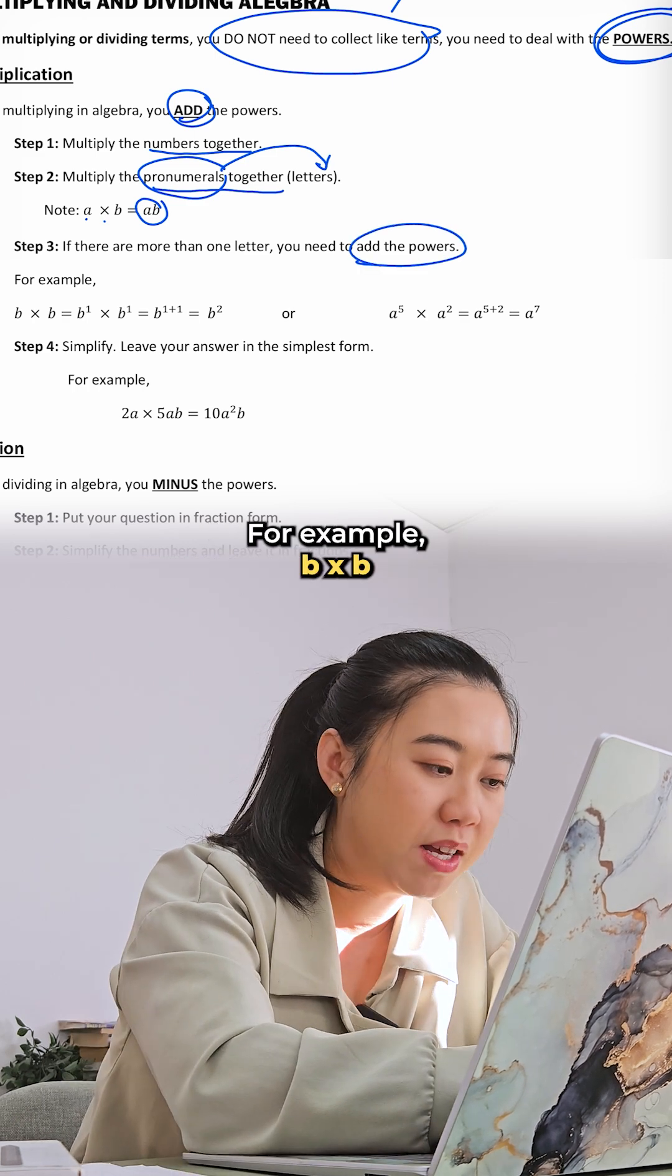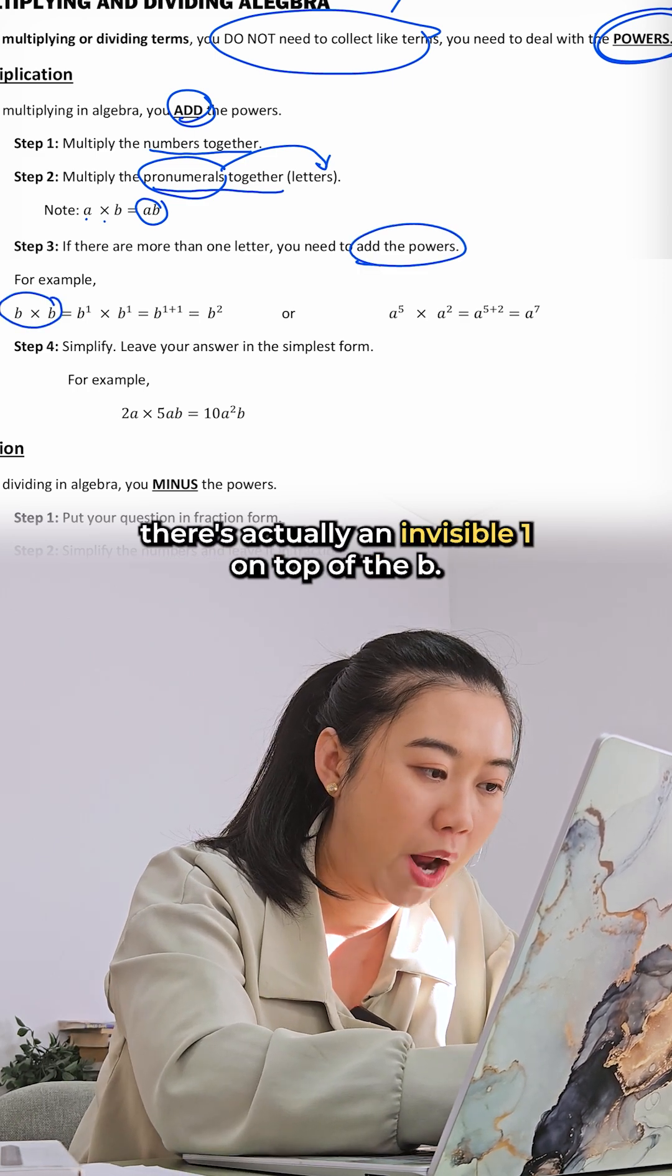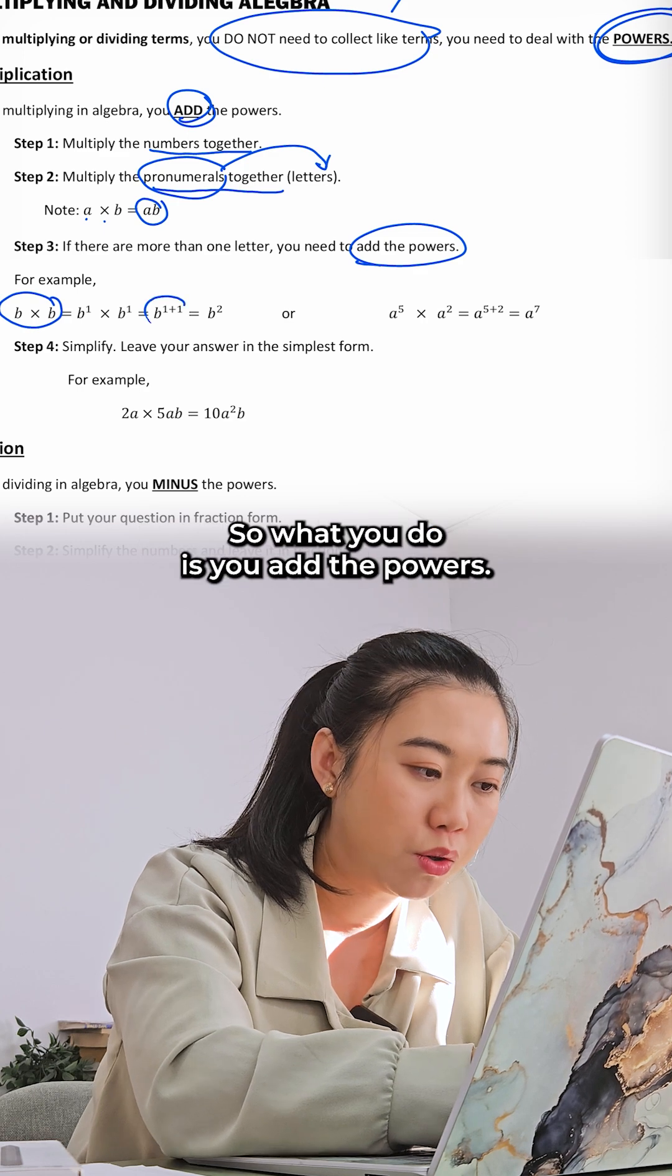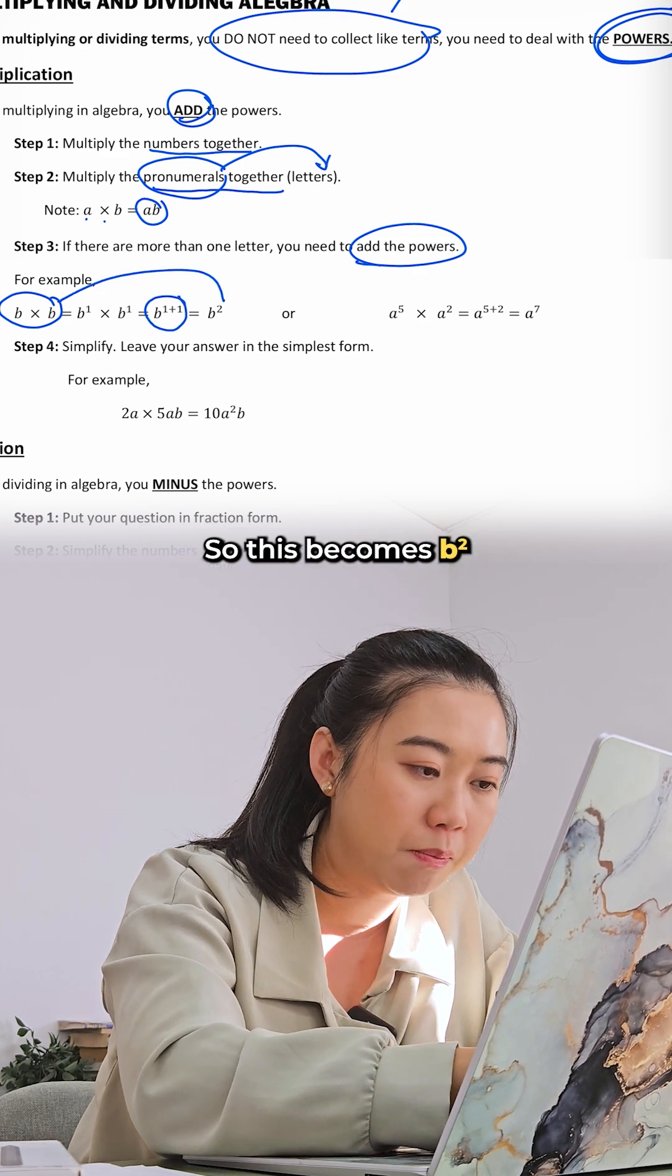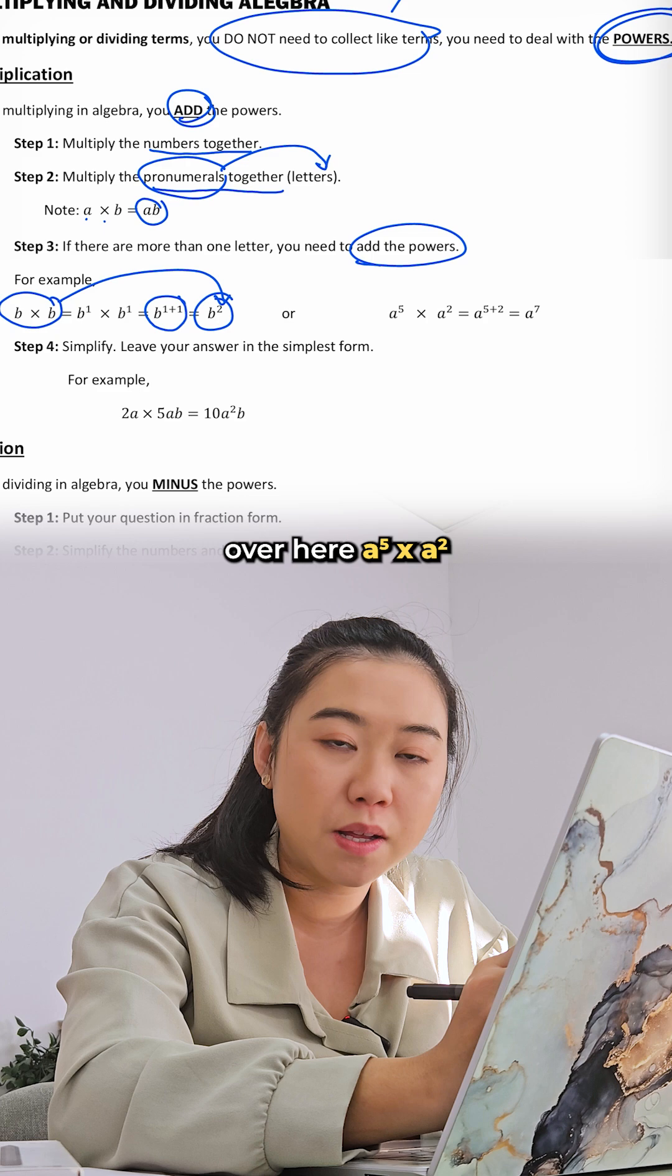For example, if there's b times b, there's actually an invisible one on top of the b. So what you do is you add the powers, so this becomes b squared. Same thing over here, a to the power of five times a squared is a to the power seven.